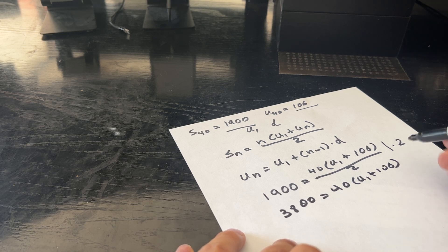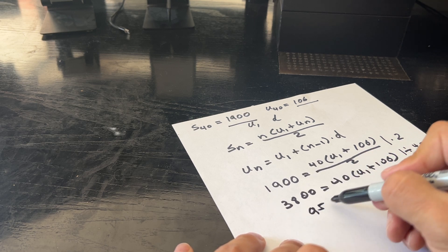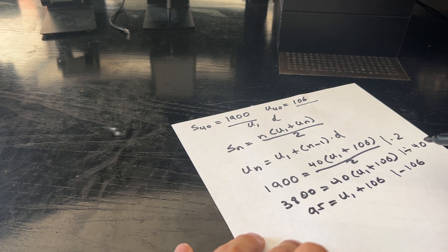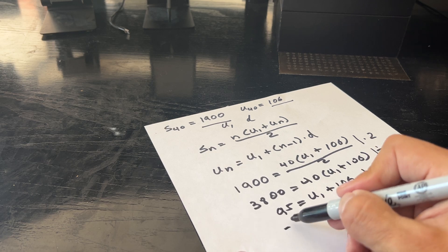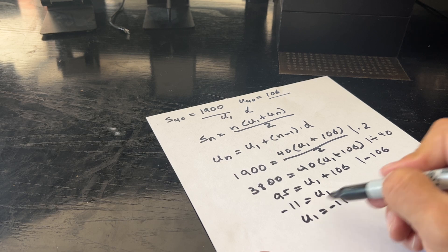And now we divide by 40 on both sides. That gives us 95 equals U1 plus 106. We subtract 106 on both sides of the equation, and that gives us that minus 11 equals U1, or just for proper notation, U1 equals minus 11.